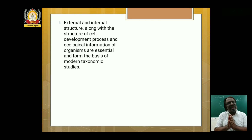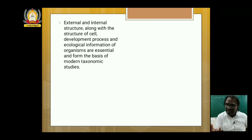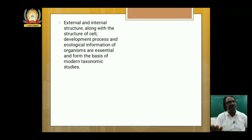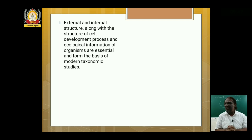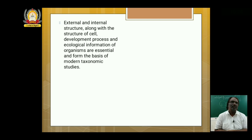In order to classify organisms, what characteristics do we consider? We consider external features — morphological details. For a plant, we consider whether roots are tap roots or fibrous roots, the arrangement of leaves, veins, and flowers. For animals, we also consider internal structural organization — anatomical details. Cellular details are also equally important.